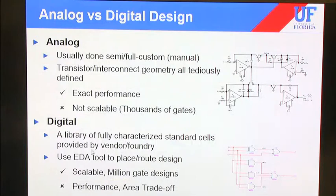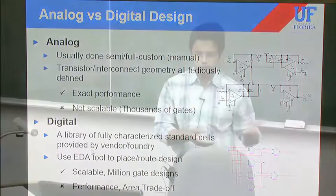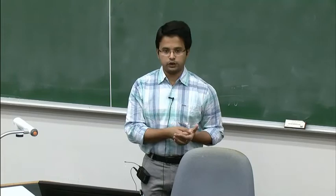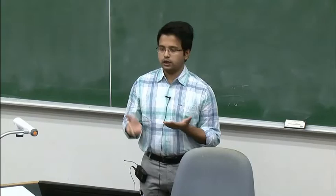When you start a chip design, there are two major divisions: analog design and digital design. In analog design, most cases are semi or fully custom — you cannot automate much. Analog design is not completely scalable; for example, a clock generator designed in 90 nm technology cannot simply be scaled down to 45 nm. But in digital design, you receive a library from the foundry where you'll fabricate, and you can use EDA tools to perform placement, routing, and floorplanning automatically.